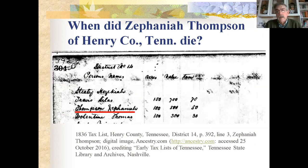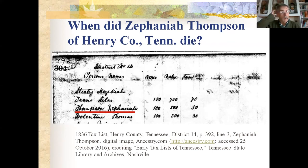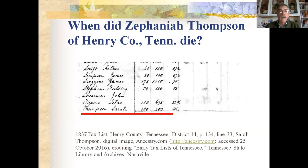Another example: my own ancestor Zephaniah Thompson of Henry County, Tennessee. No tombstone or burial information — I wanted to know when he died. He was on the 1836 tax list with 100 acres of land. The next year, 1837, Sarah Thompson — his wife — is listed with the same 100 acres. So he died between 1836 and 1837.